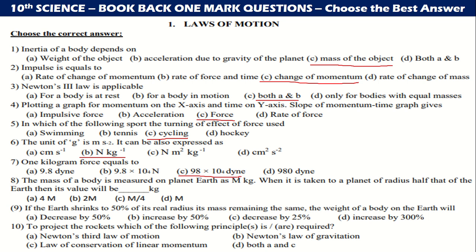The mass of a body is measured on planet Earth as m kg. When it is taken to a planet of radius half that of the Earth, then its value will be m kg.